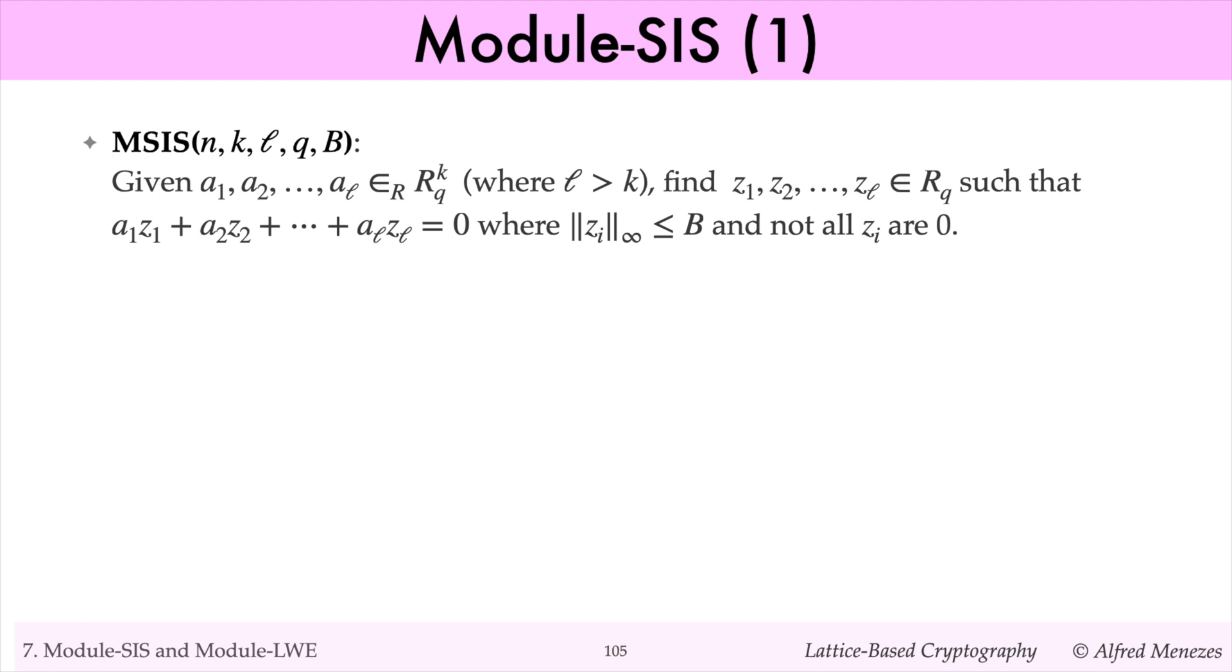The module SIS problem is the following. Given L randomly selected polynomial vectors a1, a2 up to al, find small polynomials z1 up to zl, such that a1*z1 plus a2*z2 plus ... plus al*zl equals 0. Here, small means that all the coefficients of the zi polynomials are between minus b and b. Also, to rule out the trivial solution, the zi should not all be 0.